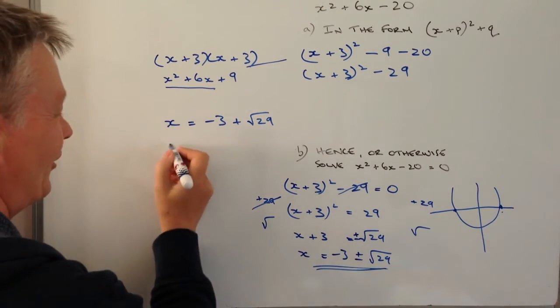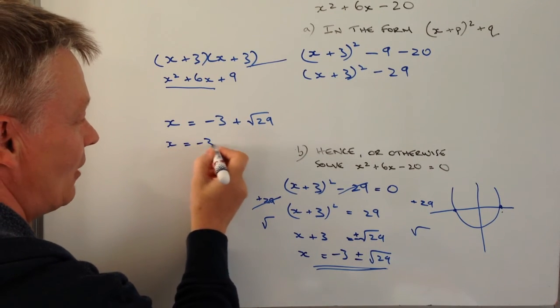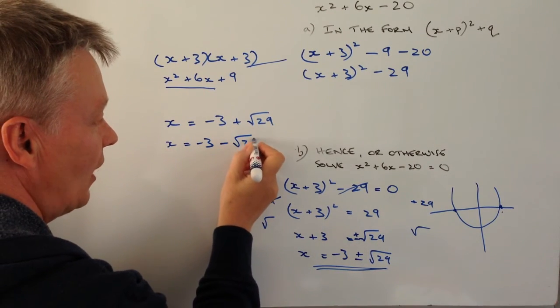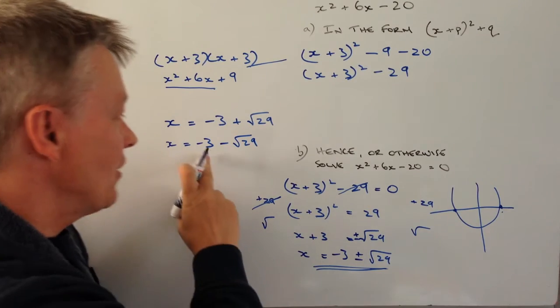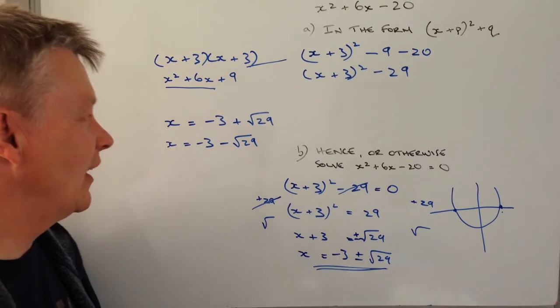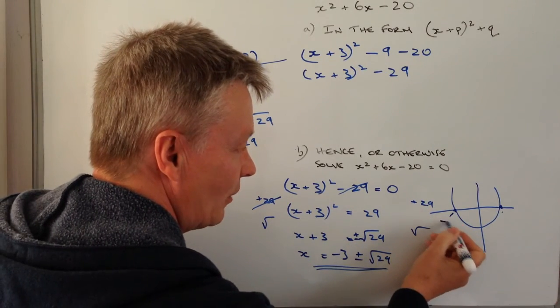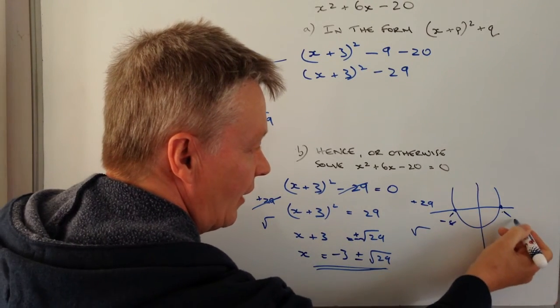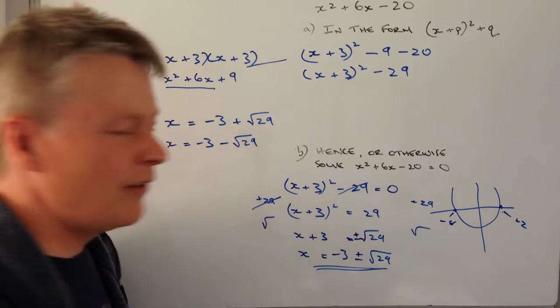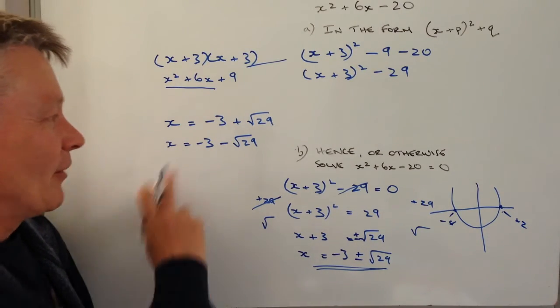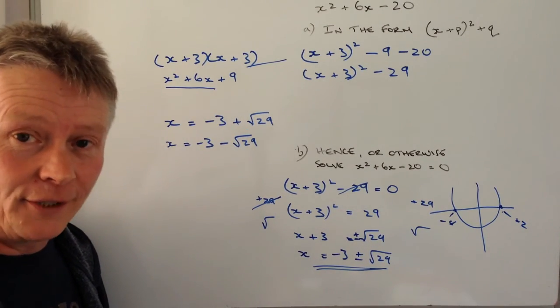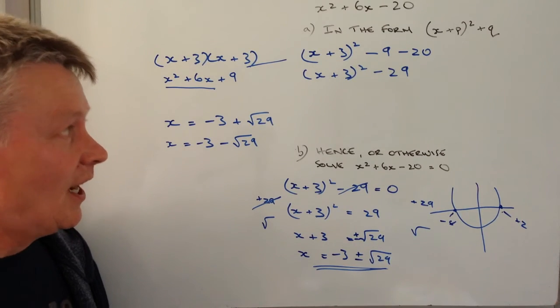And the other value is x = -3 - √29. So that's going to be -3 - 5. Very roughly, it's going to be around about -8. So this point here will be about -8 and this point about plus 2, very roughly. But obviously you'll get a more accurate value if you pop that into a calculator.